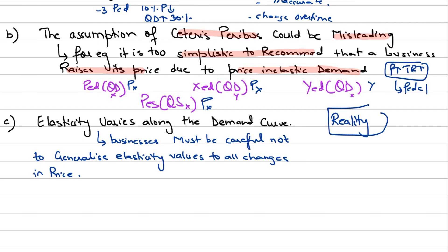Maybe a product was being consumed, but later on, due to some scientific research and evidence, it proved that it's bad for health. Then people's preferences would go down and demand would go down. Although that product's demand was inelastic and people were really consuming it, a subsequent scientific research could have an impact on the entire demand curve shifting to the left. Now people will be willing and able to buy less of it and pay less for it. Total revenues would go down, irrespective of the fact that you had increased the price based on the decision that the PED for the product is inelastic.